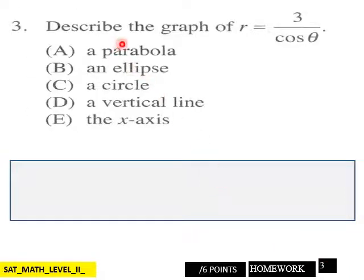Page 3, describe the graph of R equals 3 over cosine theta. And that is six points, page 3.